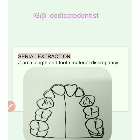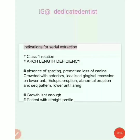The ideal condition for serial extraction is that the patient should have a Class I relationship and there is arch length and tooth material discrepancy of about 5 to 7 mm or more — meaning the teeth are very bulky and don't fit into the small arch. The arch is small compared to the tooth material. Indications for serial extraction include: Class I relation, arch length deficiency, insufficient growth, and patients with a straight and pleasing profile.